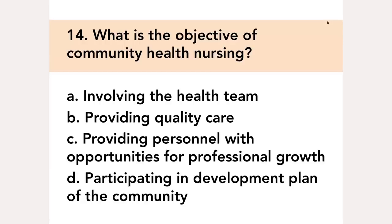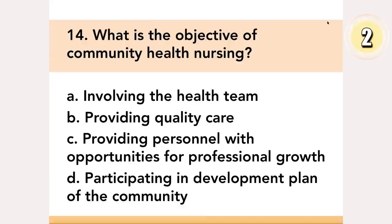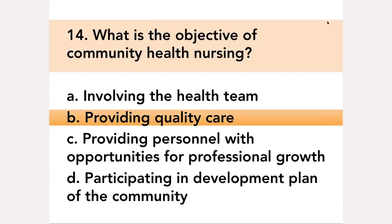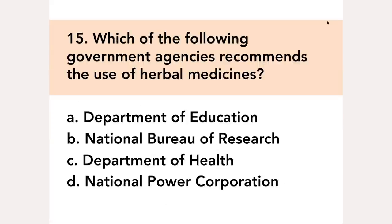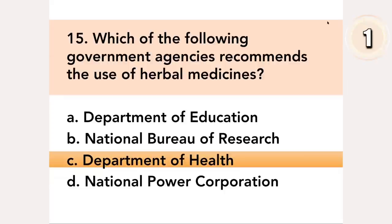What is the objective of community health nursing? A. Involving the health team, B. Providing quality care, C. Providing personnel with opportunities for professional growth, D. Participating in development plan of the community. Answer: B. Providing quality care. Which of the following government agencies recommends the use of herbal medicines? A. Department of Education, B. National Bureau of Research, C. Department of Health, D. National Power Corporation. Answer: C. Department of Health.